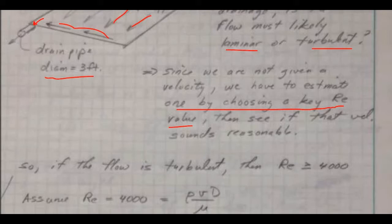So if the flow were to be turbulent, then Reynolds number—I know there's different cutoffs for different textbooks, but let's say we're going to say the 4,000 number.